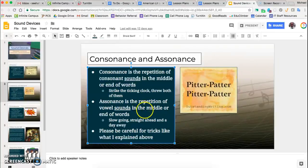Assonance is the repetition of vowel sounds in the middle or ends of words. So now we're talking about vowels. Slow going - both of them have that o in it. Straight ahead and a day away. We have day, that a sound being repeated down here - day and away.